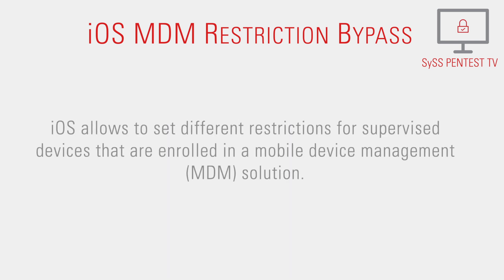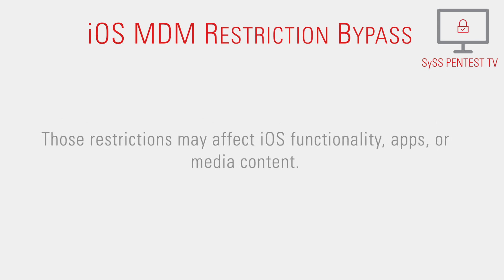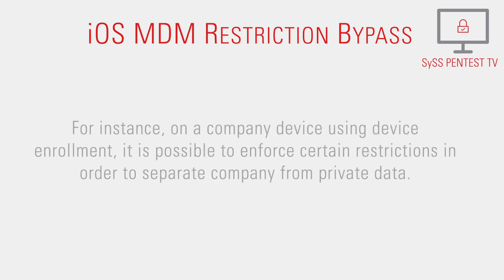iOS allows setting different restrictions for supervised devices that are enrolled in a mobile device management solution. Those restrictions may affect iOS functionality, apps, or media content. For instance, on a company device using device enrollment, it is possible to enforce certain restrictions in order to separate company from private data.